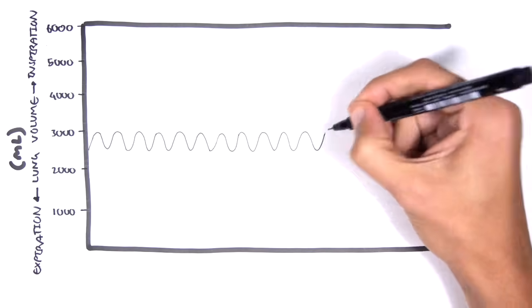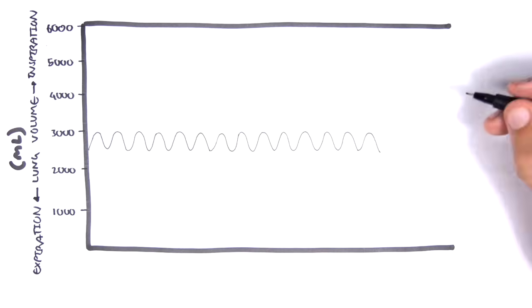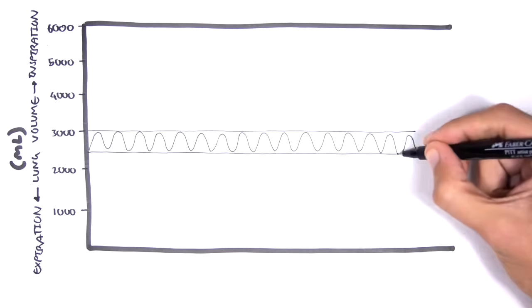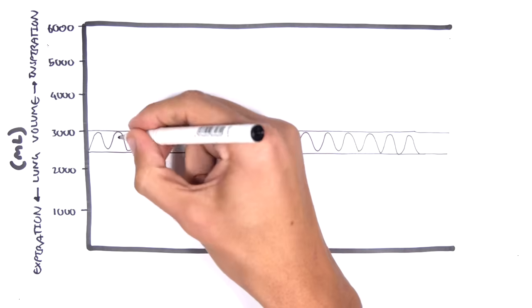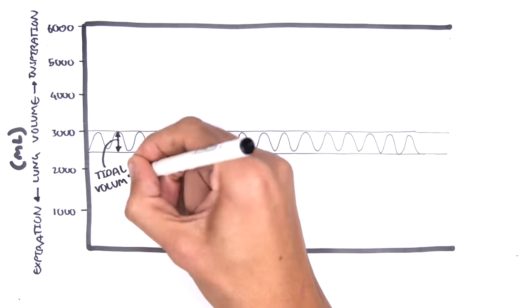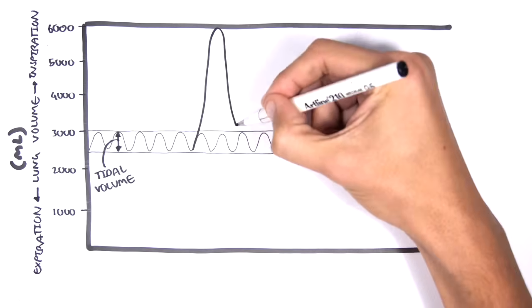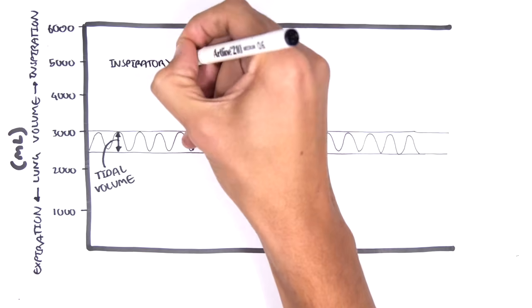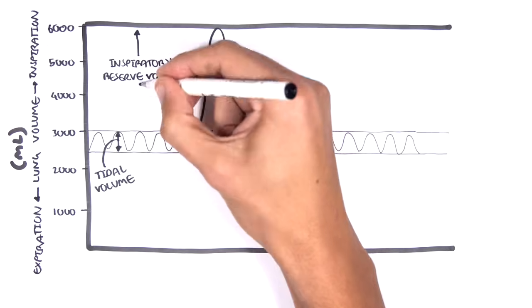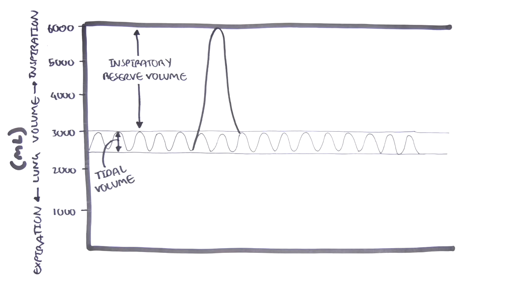So, the amount of air that moves into the lungs with each inspiration during quite normal breathing is called the tidal volume, about 500 mils or 0.5 liters. The air inspired with a maximal inspiratory effort in excess of the tidal volume is the inspiratory reserve volume, which is typically 3 liters.